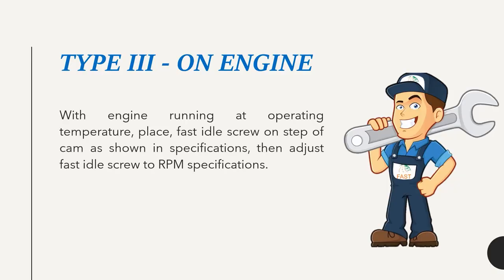Type 3 — on engine: With engine running at operating temperature, place fast idle screw on step of cam as shown in specifications, then adjust fast idle screw to RPM specifications.